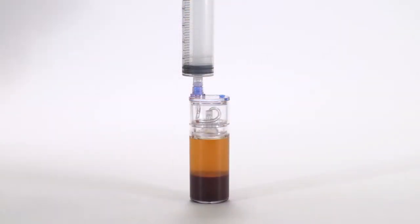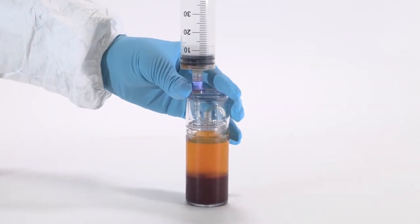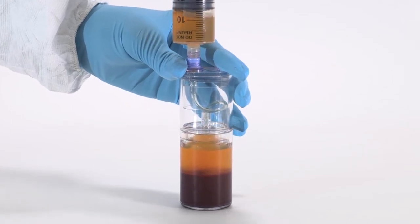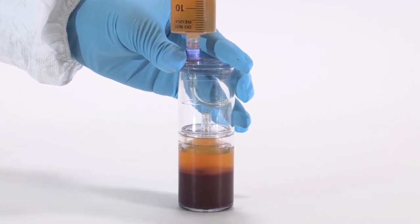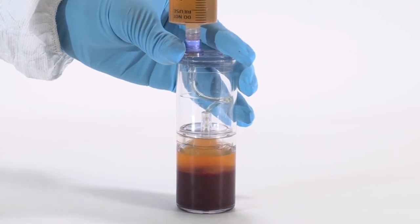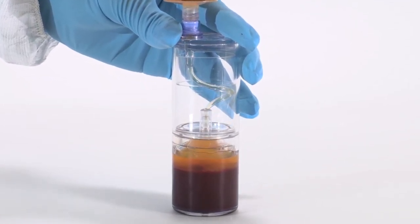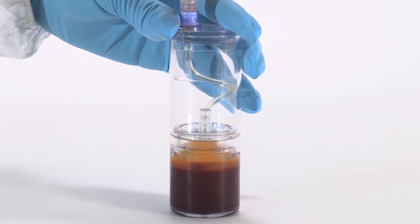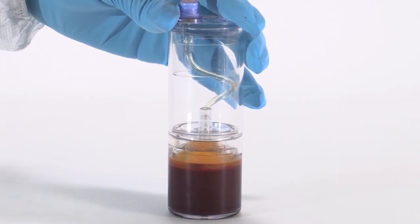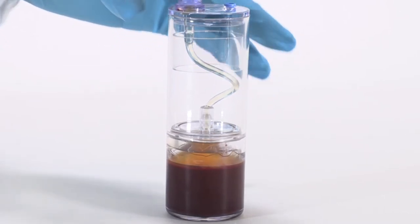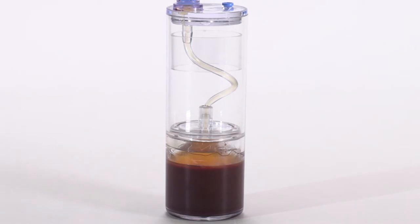Attach the sterile 60-milliliter syringe to the needleless port and aspirate the plasma. Aspirate until the piston meets the red blood cell layer, then stop aspirating. This traps the plasma and platelet buffy coat in the cone of the piston.